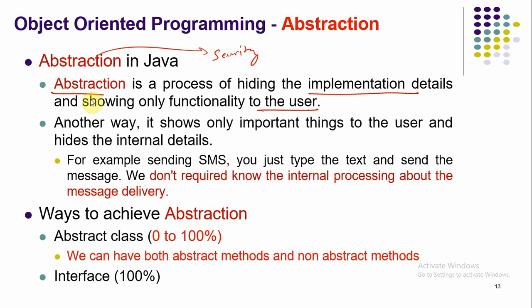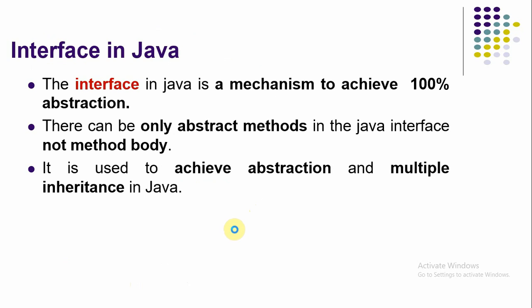So abstraction is a process of hiding those details and showing a simple interface to the user. There are two ways to implement abstraction: one is abstract class, and another is using interface. In this video we will be talking about interface and how to implement abstraction in Java.